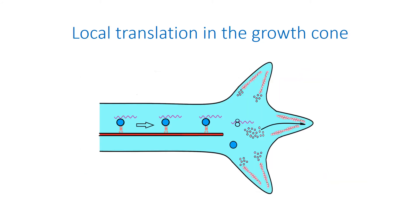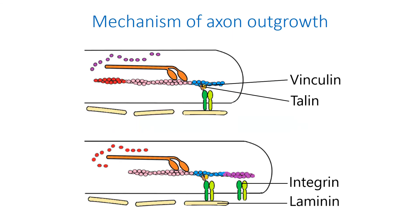The local translation that occurs in the growth cones plays an important role in their responsiveness to guidance cues. Actin molecules are added to the growth cone's filopodia that grow in the attractive direction. Inside other filopodia, actin molecules are degraded through the ubiquitination of the translated proteins. Growth cones need adhesion to the substrate for their growth.